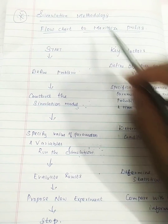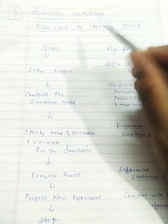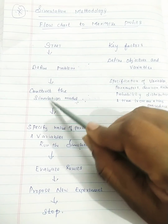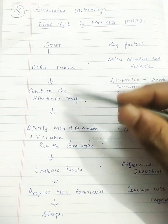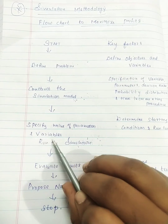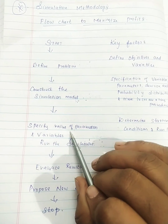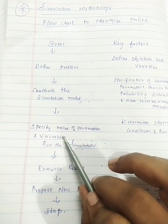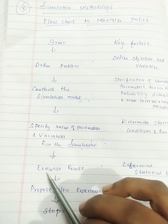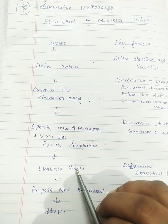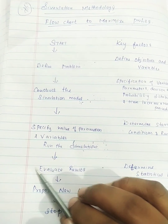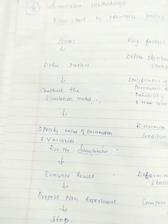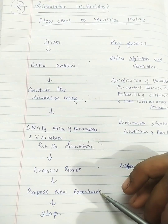This is the simulation methodology chart. In the first step, define the problem. Then we will construct a simulation model. Then we will specify the value of parameters and variables. Then we will run the simulation. Then evaluate the result. This is the proposed new experiment.